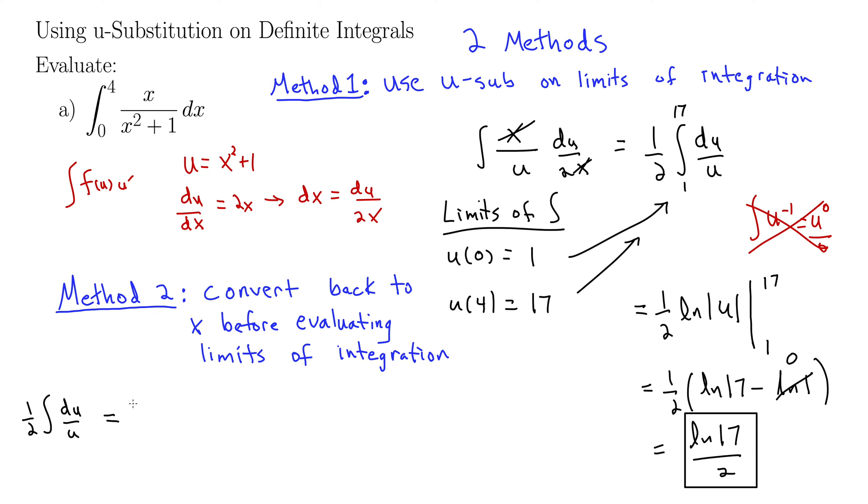We evaluate that, so I'm just leaving the limits of integration off. I'm just ignoring them for now. Natural log or 1 half natural log absolute value of u. No limits. Now I'm going to go back and convert it to x and then I'm going to add my limits back on. So 1 half natural log absolute value of x squared plus 1 from 0 to 4.